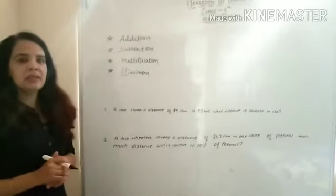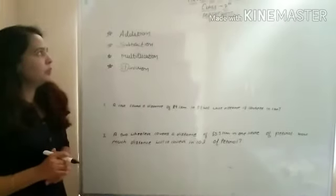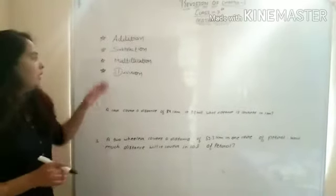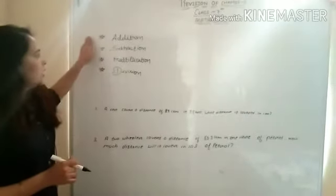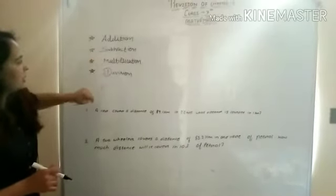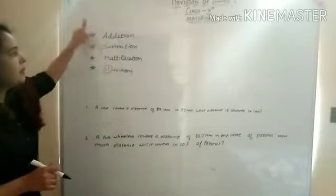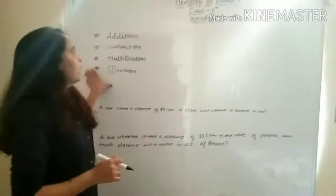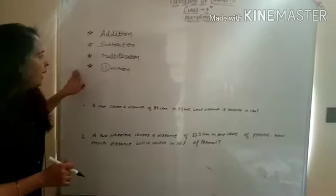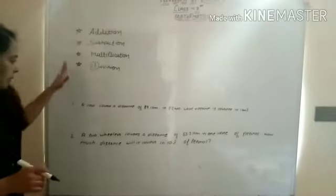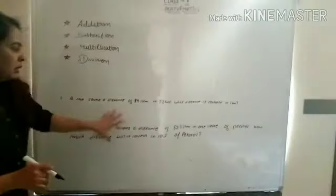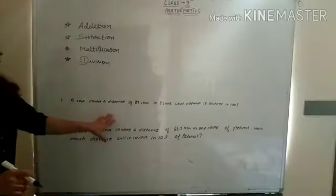Good morning students. Today we will start the revision of Chapter 2, Class 7 Mathematics. The main key points written on the board are: addition of fractions, subtraction of fractions, multiplication and division. The next main concept is how to solve statement sums. I will take some statement sums so you can easily solve them with the help of this revision.